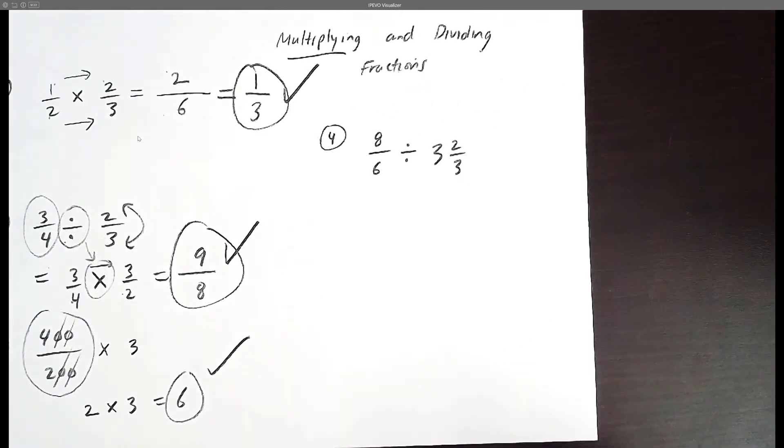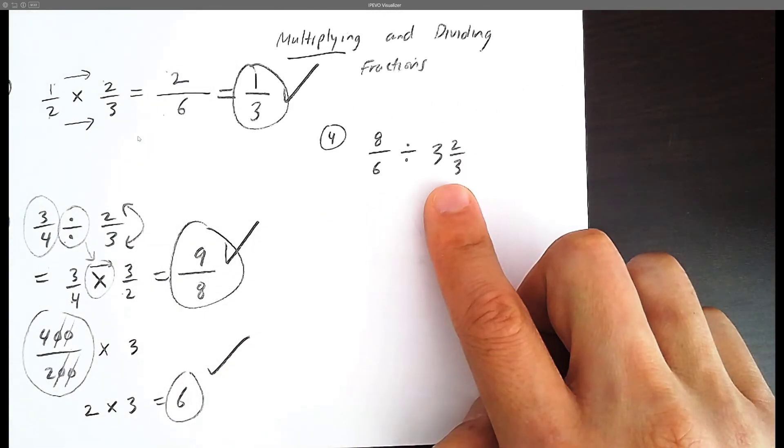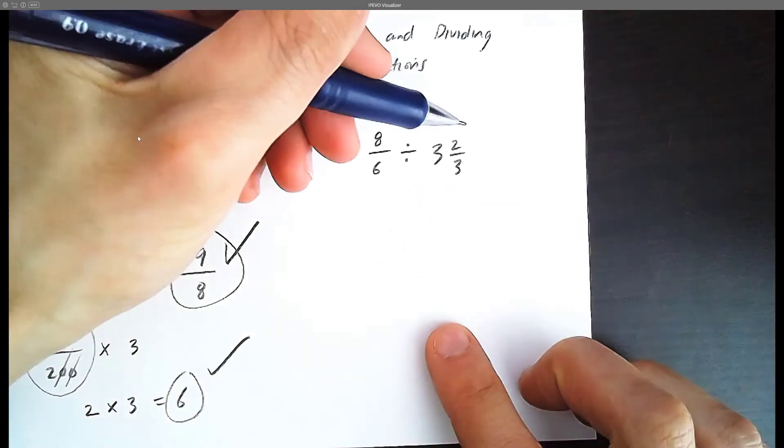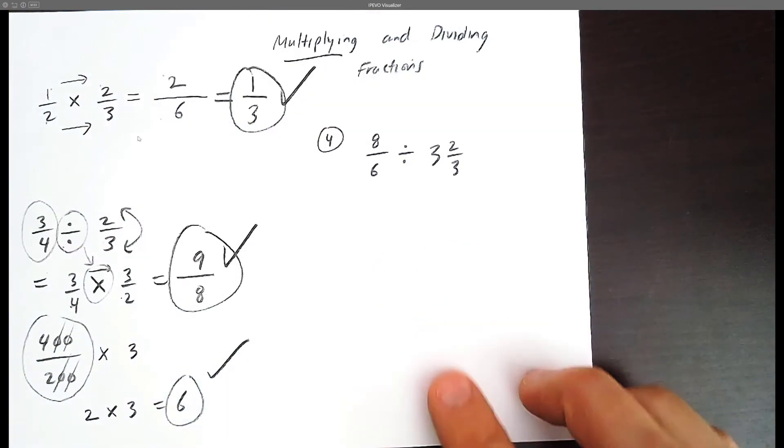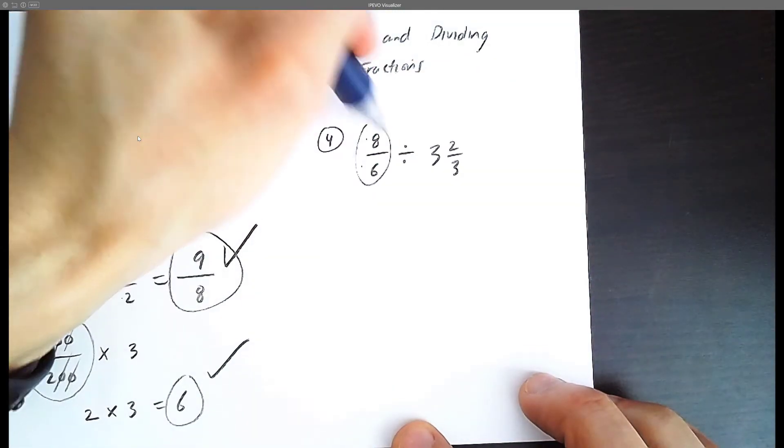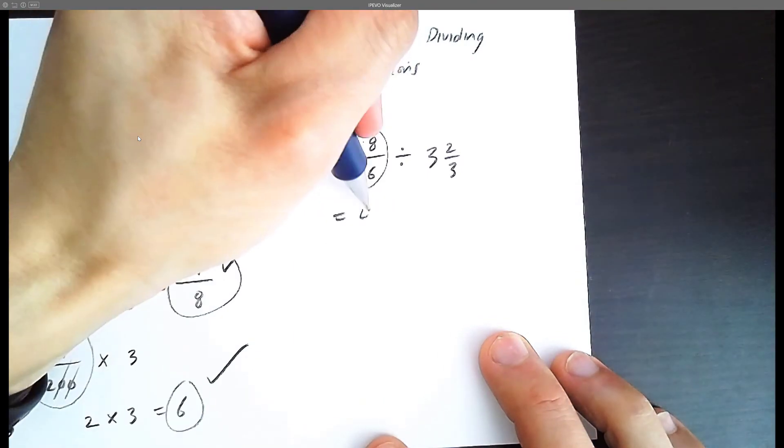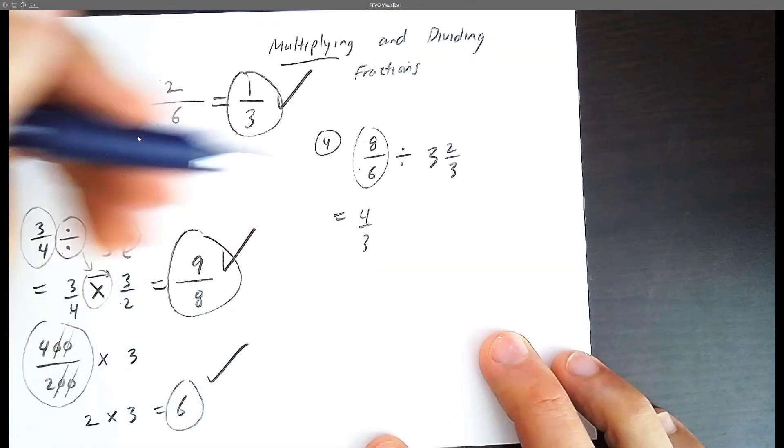Let's finish this question off with a division. Notice how we have a mixed fraction here. We really should convert it to a numerator over denominator, an improper fraction. So we have 8/6. Why don't we simplify that as well? You can divide top and bottom by 2. We have 4/3.